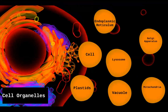Hello friends, welcome to your science classes. This is Part 2 for cell organelles. In Part 1, we already discussed endoplasmic reticulum and Golgi apparatus. Today we are going to cover the remaining four cell organelles: lysosome, mitochondria, vacuole, and plastids. So without any further delay, let us start with the lysosome.